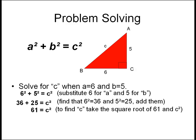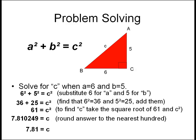To find C, take the square root of 61 and the square root of C squared. We get 7.810249 equals C. Round our answer to the nearest hundredth. 7.81 equals C is our final answer.